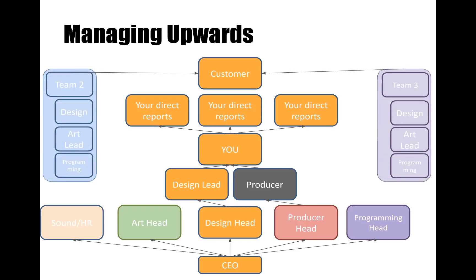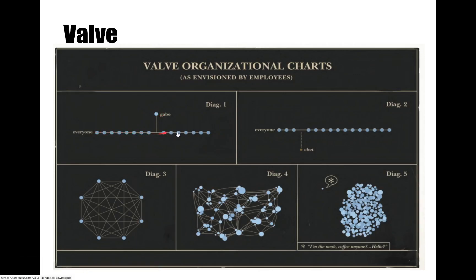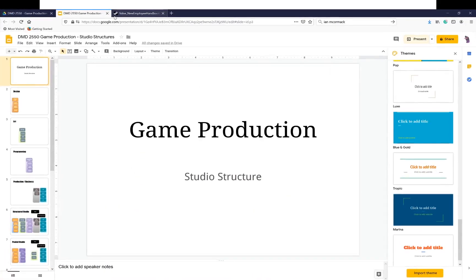There might be multiple teams in a studio as well — they're also supporting the customer and they also report out. There's an exception here: there's Valve. This is a chart from Valve's handbook. As you can see, this is Gabe right here, this little dot, and this is everyone else.